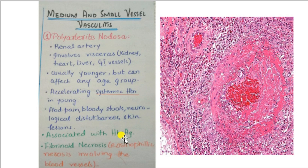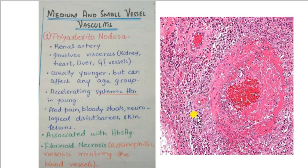The most important risk factor for polyarteritis nodosa is chronic hepatitis B infection. Hepatitis B antigens deposit in the affected vessels, and immune cells like neutrophils and mononuclear cells target those antigens, leading to immune complex formation in the vessel walls. In the acute phase there is fibrinoid necrosis — the eosinophilic necrosis involving the blood vessels. Fibrinoid necrosis is also seen in malignant hypertension; these two are the common pathologies where it is typically found.